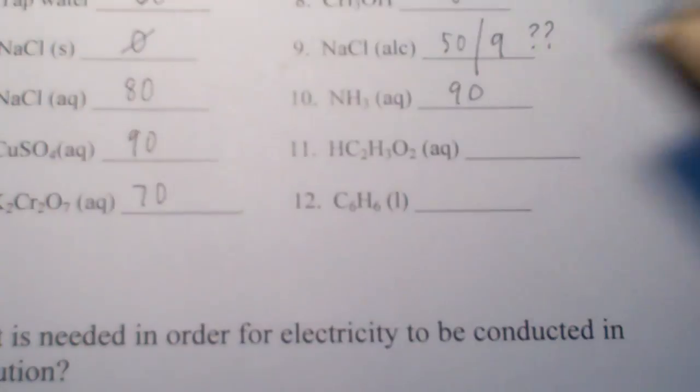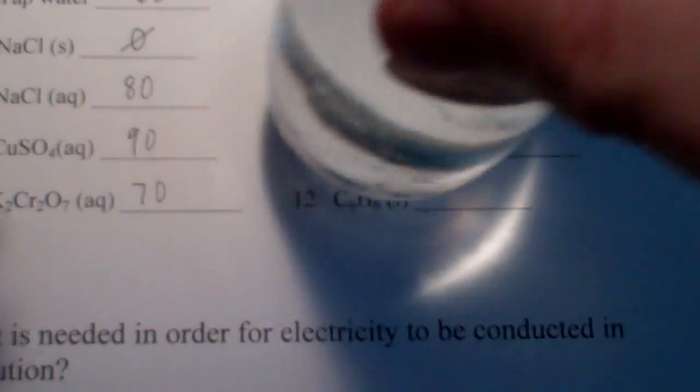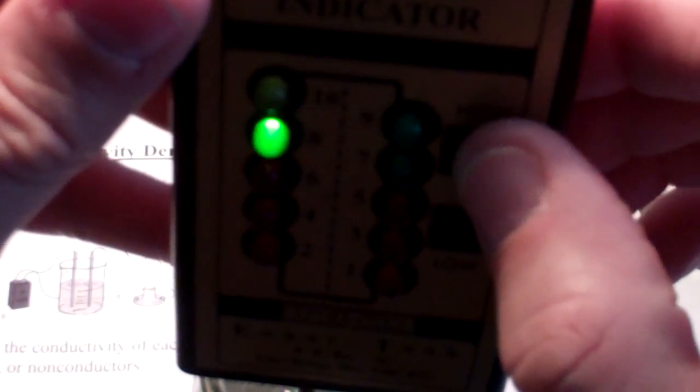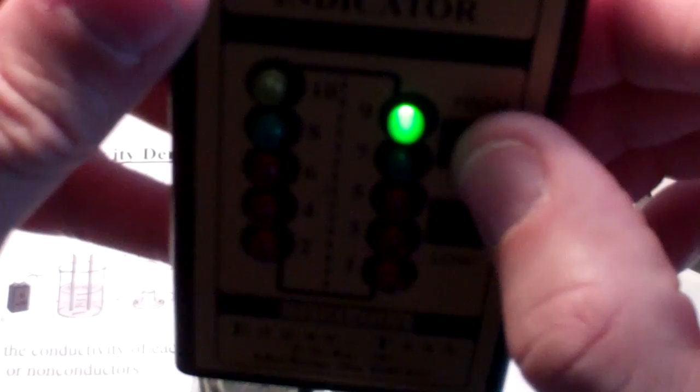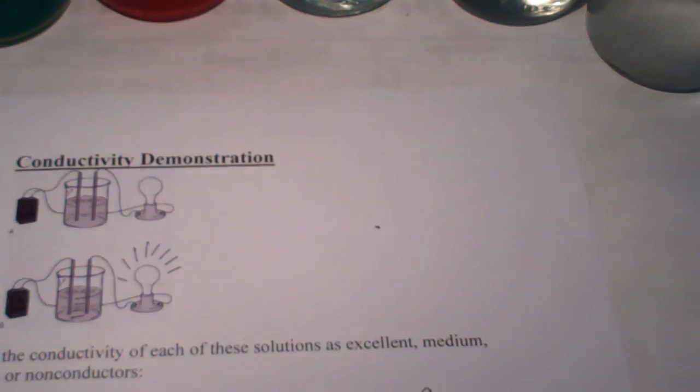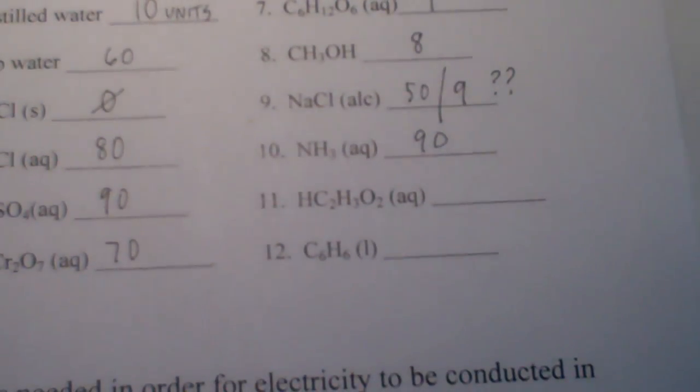Next up will be acetic acid. So, the acetic acid I'm using is actually just some white vinegar. We'll put the conductivity meter in there. Press the low setting. 10 plus. The high setting. That's up to 90 just like the ammonia was. So, that must have some ions in there as well. So, we'll record that as 90.